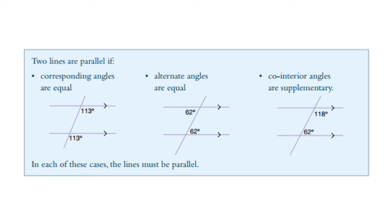We have looked at corresponding angles, and we know that corresponding angles are equal. We've also looked at alternate angles, and we know that alternate angles are equal. And we've looked at co-interior angles, and we know that co-interior angles are supplementary, which means that they add up to 180 degrees.